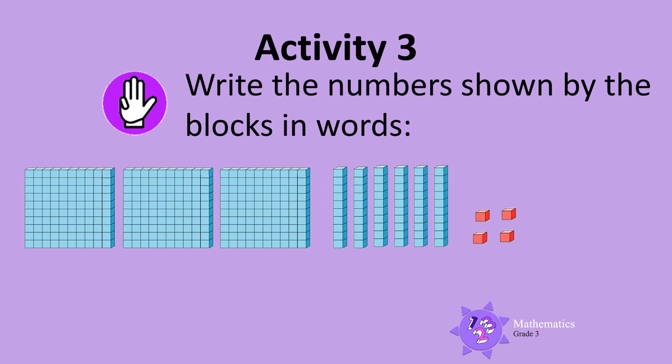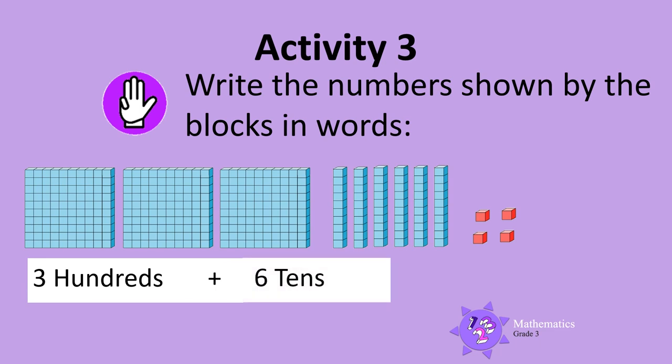Last one. Write the numbers shown by the blocks in words. There are 3 hundreds, 6 tens and 4 1's. So 300 plus 60 plus 4 is 364.